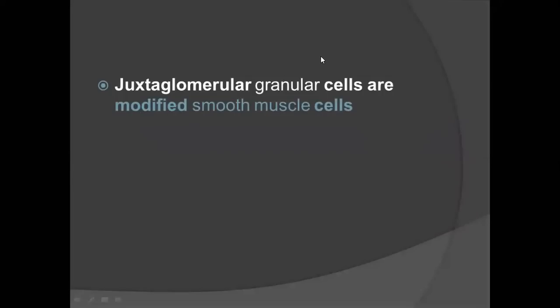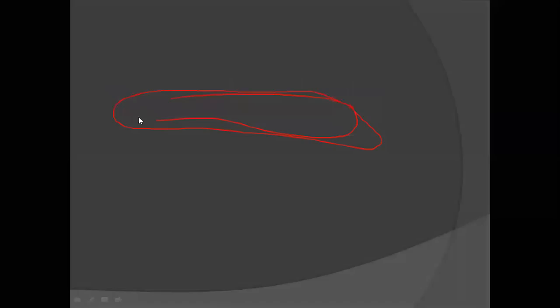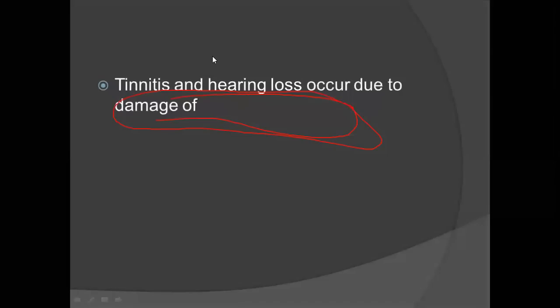Juxtaglomerular cells are modified smooth muscle cells — this is this year's MCQ. Read about juxtaglomerular cells from histology carefully. Tinnitus means ringing in the ears, and hearing loss occurred due to damage of the organ of Corti, from which the cochlear nerve arises. The cochlear nerve is responsible for carrying the sensation of hearing.